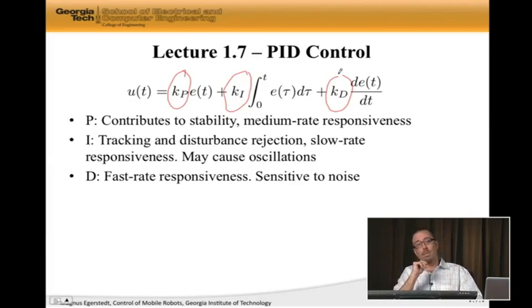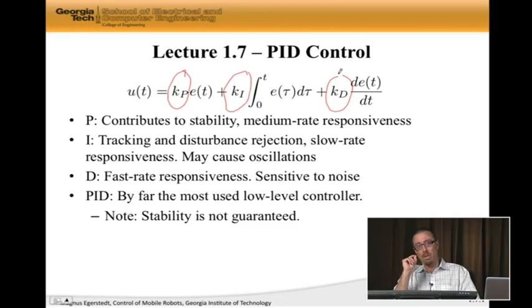The last thing I want to point out is that when you put this together, you get PID, which is by far the most used low-level controller. Low-level means that whenever you have a DC motor somewhere, and you want to make it do something, somewhere there is a PID loop. Whenever you have a chemical processing plant for getting the right concentrations in your chemicals, somewhere there is a PID regulator. It's almost everywhere, or in almost all control applications, PID shows up under the hood in some form or another.